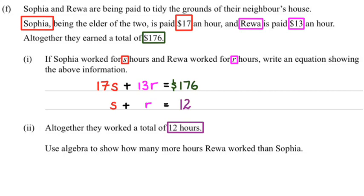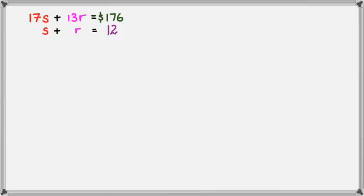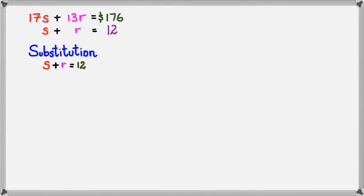Now that we have these two sets of equations, we can solve them simultaneously to figure out what S and R are. The first method I want to use is substitution. I'll also show you how to do the elimination method after this. So we have S plus R equals 12, then we can rewrite R in terms of S, so it'll be R = 12 minus S.